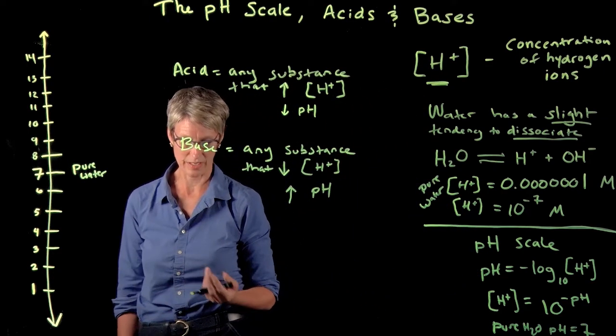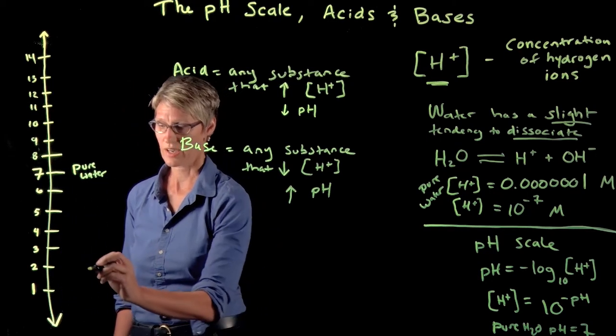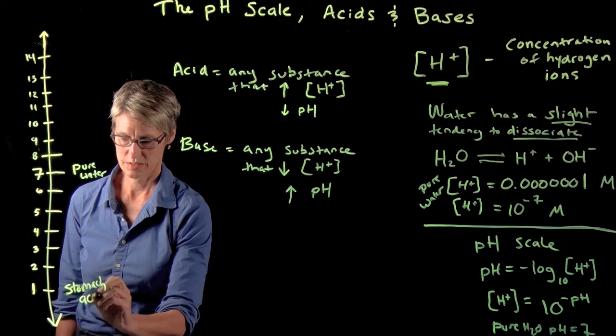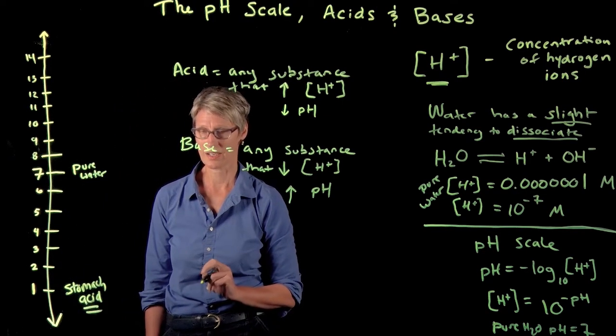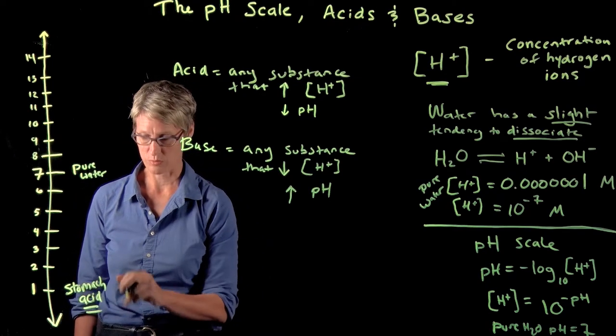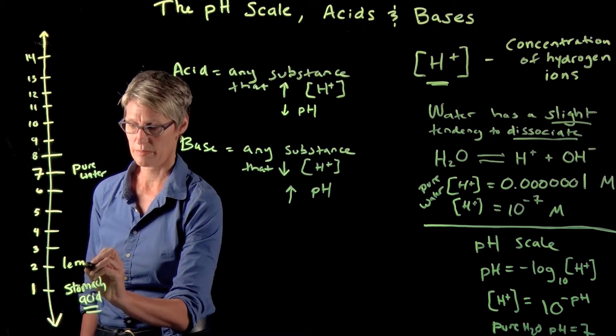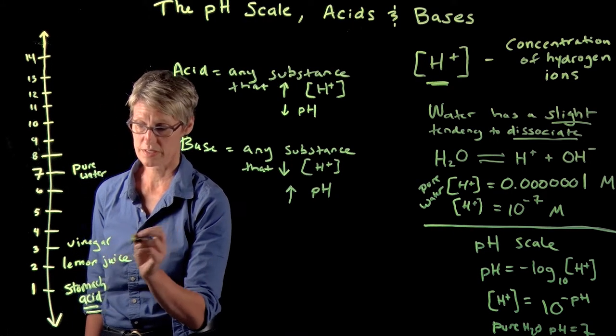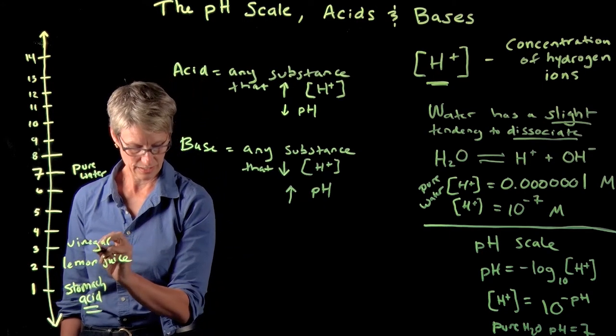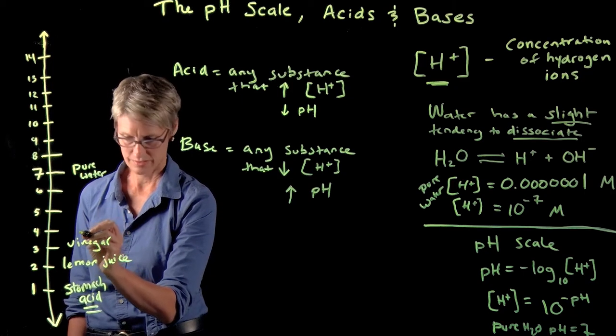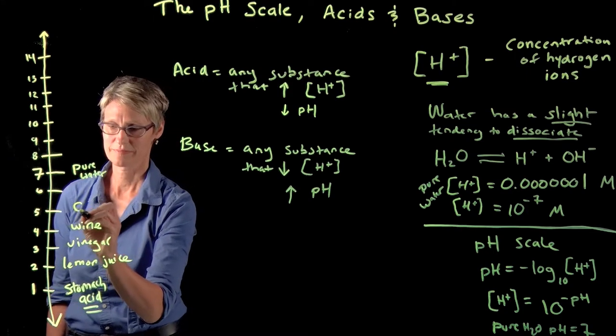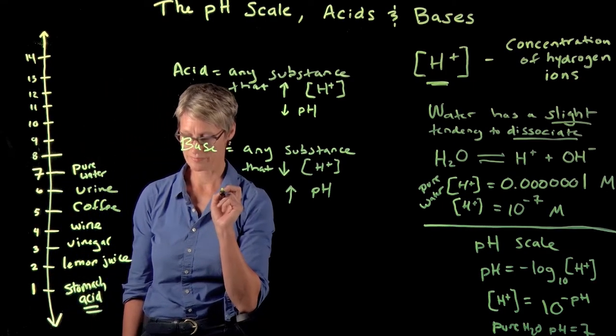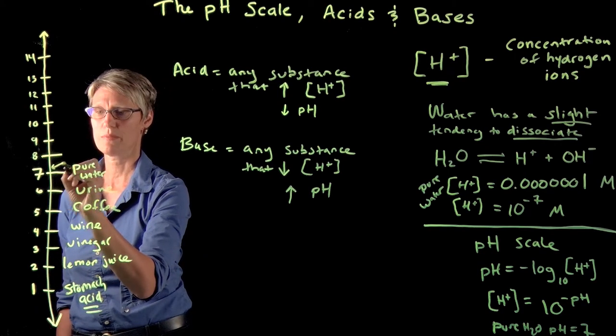Let's talk about a few substances you may be familiar with and their pHs. On the most acidic end at pH 1, we have stomach acid—concentrated hydrochloric acid. Two is the pH of lemon juice. Three is vinegar; Coca-Cola is also about pH 3. Beer is acidic, wine is somewhere in here, and coffee is at 5. Urine is right there between pure water and coffee, around 6.